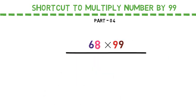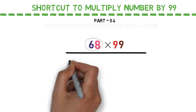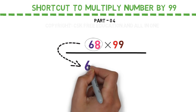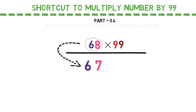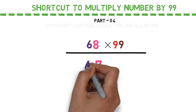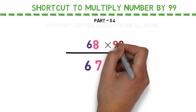First of all, subtract 1 from the 68, it becomes 67. Now from the first 9 of the 99, subtract 6 from 9, it becomes 3.